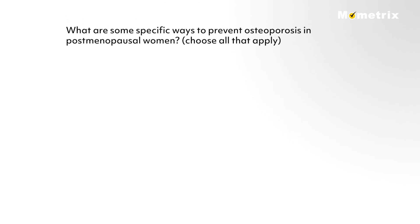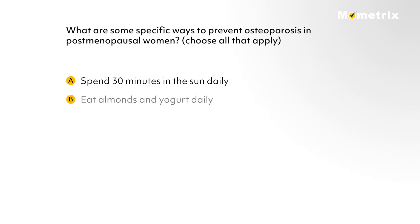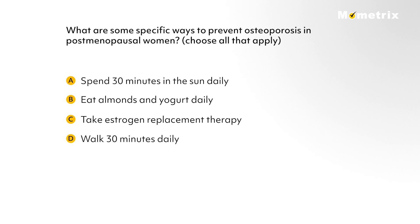What are some specific ways to prevent osteoporosis in postmenopausal women? Choose all that apply. A: spend 30 minutes in the sun daily. B: eat almonds and yogurt daily. C: take estrogen replacement therapy. D: walk 30 minutes daily. Or E: eat more chicken.